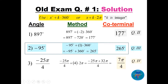Remember, when you use these formulas, k is always an integer. For -95°, which is a negative angle, we add multiples of 360. Adding one complete cycle: -95 plus 360 equals 265, so 265° lies in quadrant 3.